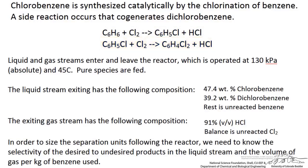Liquid and gas streams enter and leave the reactor, which is operated at 130 kilopascals and 45 degrees Celsius. Pure species are fed, so we have a pure benzene liquid feed and a pure gaseous chlorine feed. The exiting liquid stream has the following composition given in weight percents, and the exiting gas stream has a different composition given in volume percents.